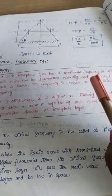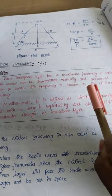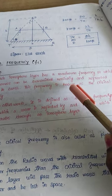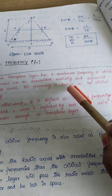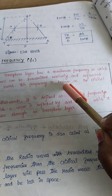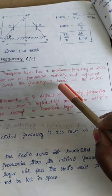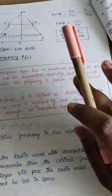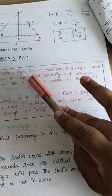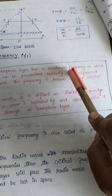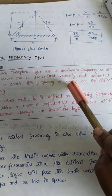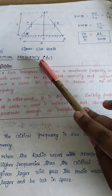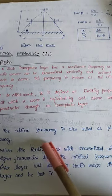In an ionosphere layer, up to the maximum frequency, radio waves can be reflected back to the earth. At some frequency, the wave cannot be reflected back to the earth — it will lose energy. In that case, the frequency is more than the critical frequency. So only when the frequency is equal to or below the critical frequency can the radio waves be transmitted back to the earth. The other name for critical frequency is plasma frequency.